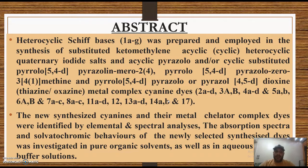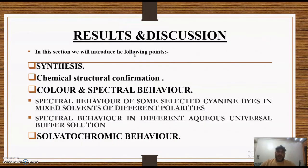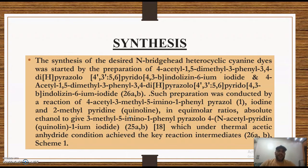The newly synthesized cyanine dyes and their metal complex dyes were identified by elemental and spectral analysis. The absorption spectra and solvatochromic behavior of the newly selected cyanine dyes was investigated in pure organic solvents, discussed in the solvatochromic section, as well as in aqueous universal buffer solutions. In the results and discussion section, we will introduce the following points: synthesis, chemical structure confirmation, and the spectral behavior, which is divided into spectral behavior of selected cyanine dyes in mixed solvents of different polarity and spectral behavior in different aqueous universal buffer solutions.